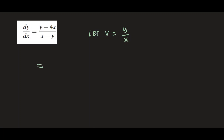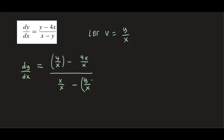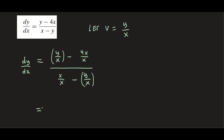On the right-hand side, dividing by x, we have y over x minus 4x over x, all over x over x minus y over x. On the left-hand side we still have dy/dx. Now you can simplify, and these terms are going to be replaced with v because v is y over x. So we have y over x, that's going to be v, minus 4x over x which is just 4, over x over x which is just 1, and then y over x is again v.